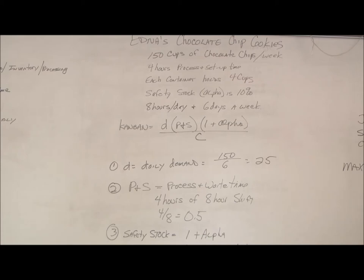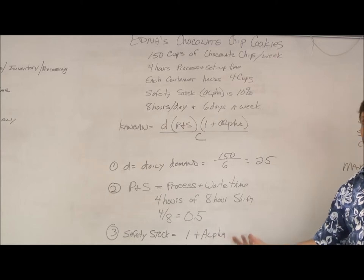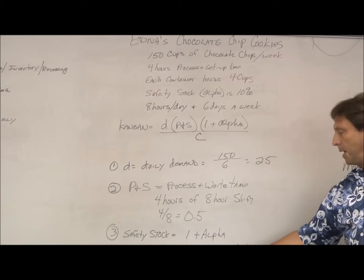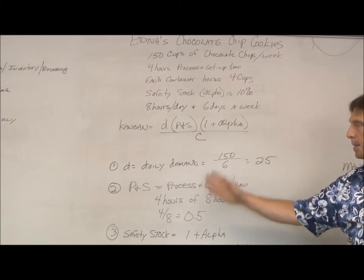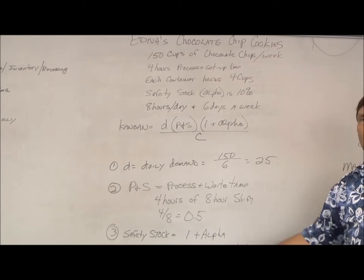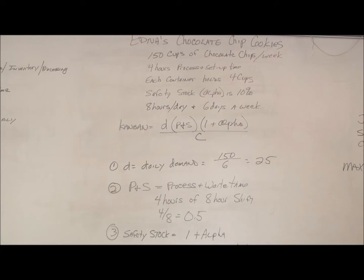We also want safety stock in case the customer wants some more. So that's one plus alpha. Our alpha is our 10%. And one plus 10% - because if we just multiplied this number by 10%, we'd be getting the number of the safety stock. We want 10% more, so it's one plus the percentage.